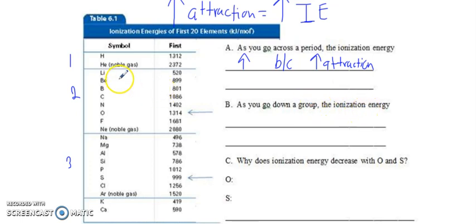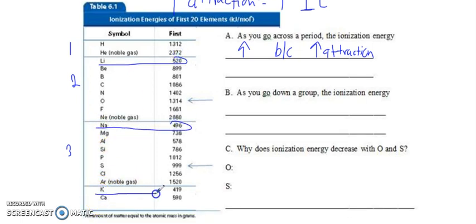Now, as you go down a group, so let's pick all of our alkali metals. Let's pick lithium. Here is sodium. Here is potassium. What happens to my ionization energies as I go down a group? 520, 496, 419. As they go down a group, ionization energy goes down because, you're right, it's all about attraction, because attraction also goes down.